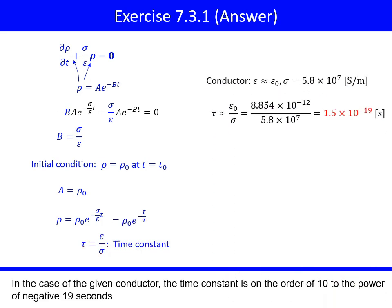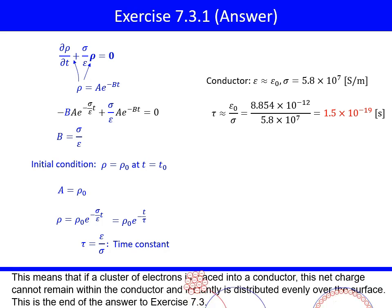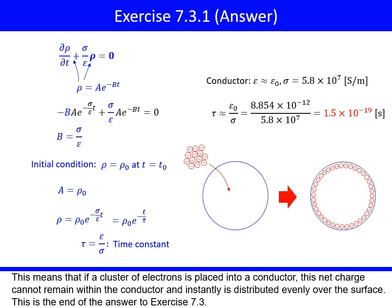In the case of the given conductor, the time constant is on the order of 10 to the power of negative 19 seconds. This means that if a cluster of electrons is placed into a conductor, this net charge cannot remain within the conductor and instantly is distributed evenly over the surface. This is the end of the answer to exercise 7.3.